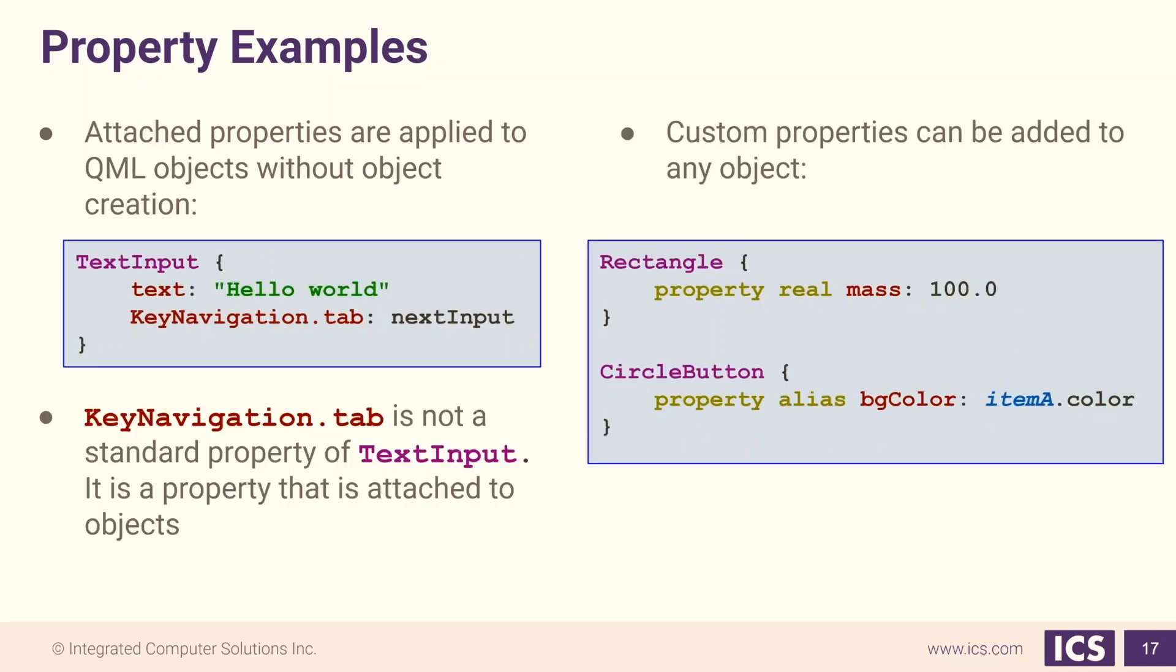In addition to our standard properties, we also have attached properties. These properties are applied to QML objects. The KeyNavigation property is an example of one kind of attached property. This allows us to work with key navigation like tab, back tab, up, down, etc.